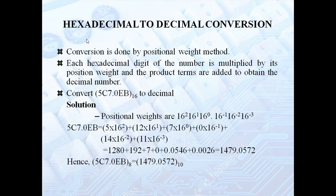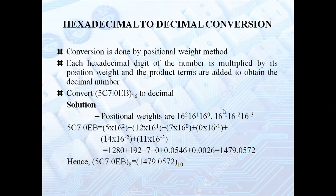Let us see how to convert hexadecimal to decimal. The conversion is done by the positional weight method: each hexadecimal digit is multiplied by its positional weight and the product terms are added to obtain the decimal number. The positional weights are 16 power 0, 16 power 1, 16 power 2, and in the fractional part 16 power minus 1, 16 power minus 2, 16 power minus 3. For example: 7 into 16 power 0, C into 16 power 1, and another digit into 16 power 2. In the fractional part, 0 into 16 power minus 1, E (=14) into 16 power minus 2, B (=11) into 16 power minus 3. Sum all values to obtain the decimal number.